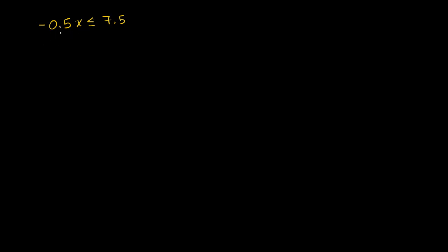Think of it this way — I'll do a simple example. If I were to tell you that 1 is less than 2, I think you would agree with that. Now what happens if I multiply both sides by negative 1? Negative 1 versus negative 2. All of a sudden, negative 2 is more negative than negative 1, so negative 2 is actually less than negative 1. This isn't a proof, but it'll give you comfort on why you swap the sign. If something is larger, when you take the negative of both, it'll be more negative. So that's why if we divide both sides by a negative number, we need to swap the sign.